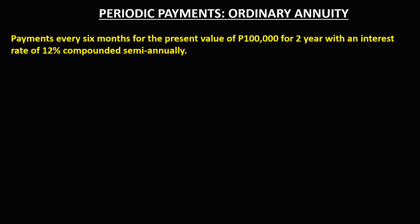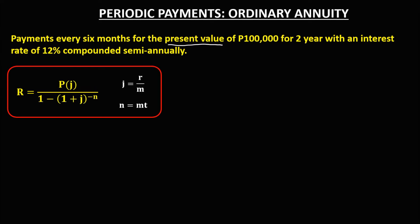For this next problem, since the given is the present value, we use this formula to find the periodic payment. The given are: present value is 100,000, time is 2 years, interest rate R is 12%, and since it is semi-annually, therefore M is equal to 2, so twice in a year.